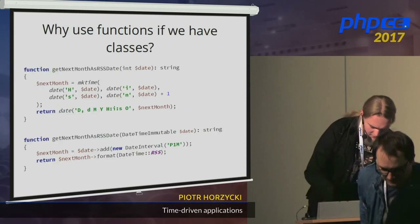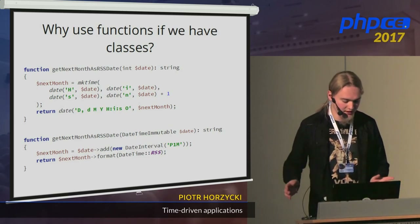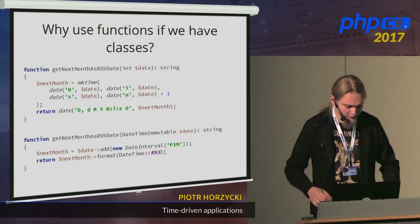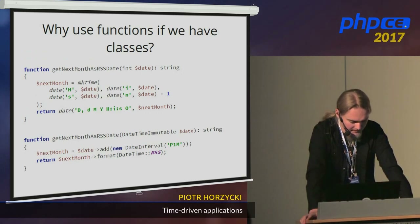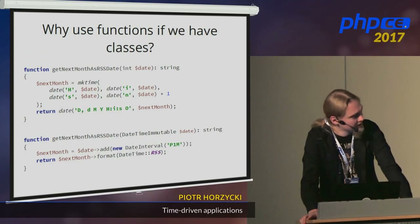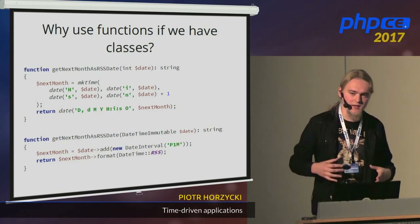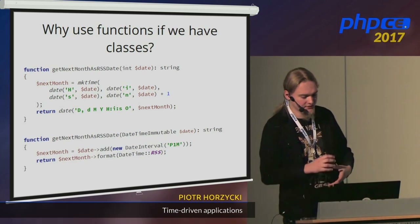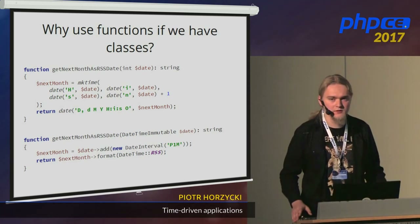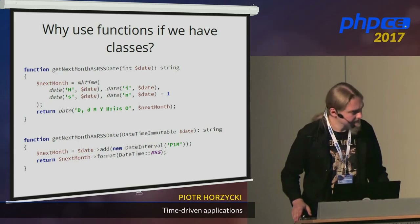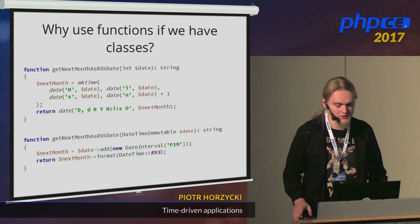But why use some old functions from C or C++ if we have classes and can do it in an object-oriented way? These two functions do exactly the same thing — they receive some date and time, add one month to it, and print the new date and time in the RSS format. The second way is more clear, more readable.